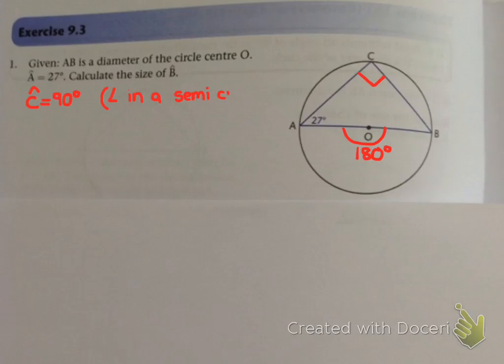And instead of using theorem number 2's reason, it's much simpler to use theorem number 3's reason, angle in a semicircle. Well that helps me now to form an equation, because I have two angles in the triangle.